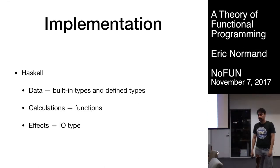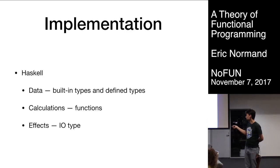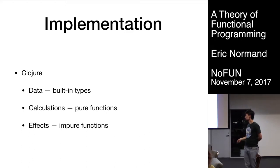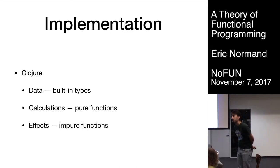Here are a couple of example ways that functional programming is implemented in a couple of languages. In Haskell, you have data — built-in data types and you can define your own. Calculations are functions. And there's a special type called IO that's for effects. You can see it's pretty clearly delineated in Haskell, and the type system helps you keep everything straight. In Clojure, it has built-in types and collections, and we use functions for both calculations and effects. An audience member asks about functions as data — that's coming up.